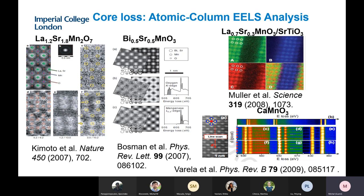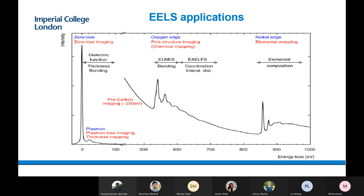Here are more typical applications of core loss edges. We are doing mapping — taken to an extreme when we look at atomic columns, where you can map almost individual elements and where the atoms are placed in the lattice. So we get a chemical map of the crystal lattice of your sample. As you can see, there are many applications for core loss edges — you can extract a lot of information, starting from thickness of your sample to intricate knowledge about bonding environment, elemental composition, and even optical properties if your system is good enough.